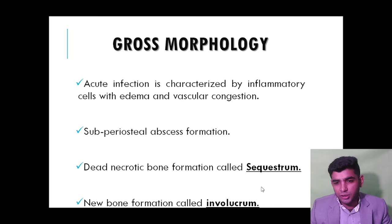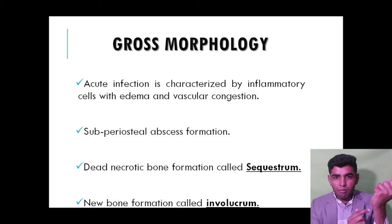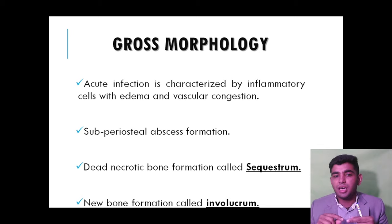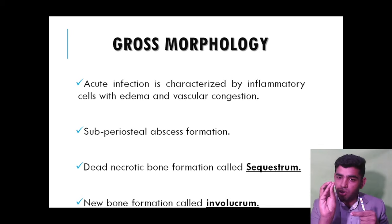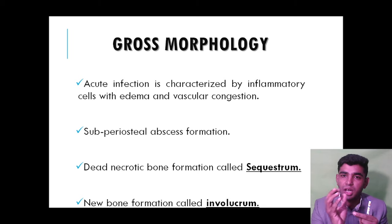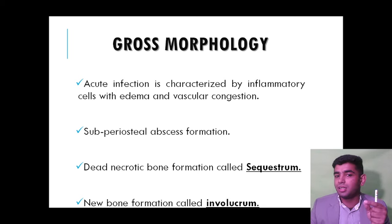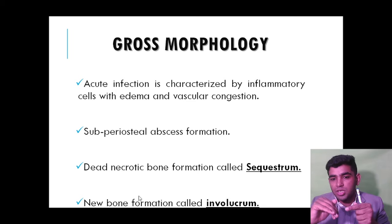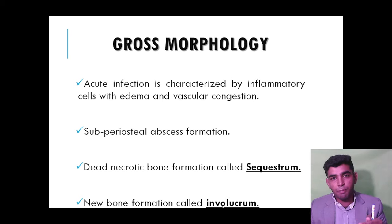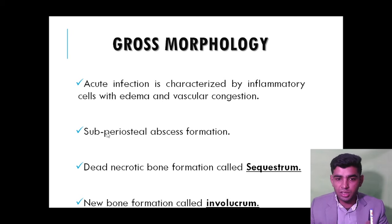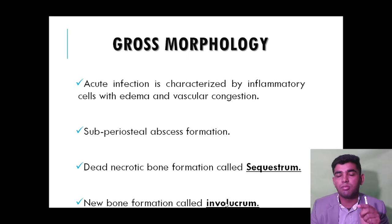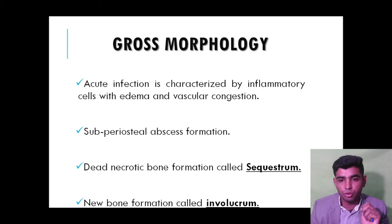Two important terms: sequestrum — the dead necrotic bone formed due to inflammation — and involucrum — the new bone formation that surrounds it. The old bone degrades and new bone forms around it, hence bone-in-bone. Sequestrum and involucrum are the most important concepts in osteomyelitis pathology.